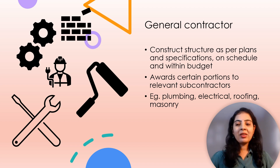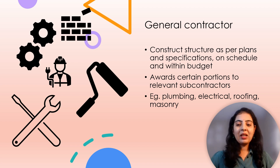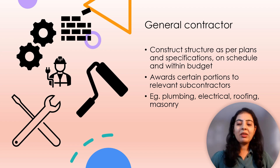To do this, the general contractor awards several portions of the building work to pertinent subcontractors, such as HVAC, plumbing, electrical, roofing, masonry, and steel. The general contractor coordinates the requirements and efforts of these and other related trades.